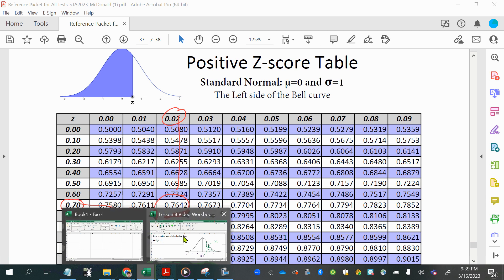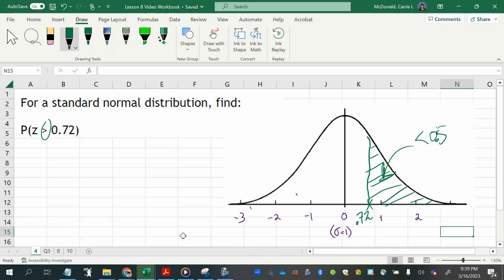So we'll take that 0.7642, which is over here, and to get this other area, which we know should be less than half, which so certainly this should not be your final answer, we're going to actually subtract the left area from 1, and that will give us our final answer, which is 0.2358.